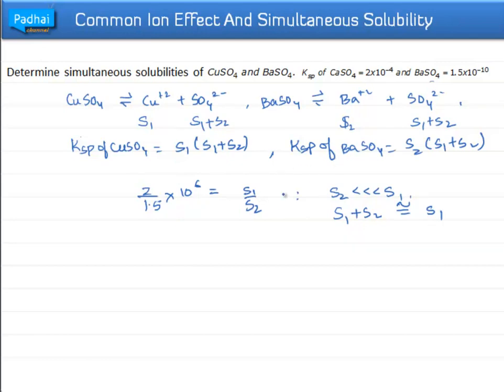In equation 2, Ksp of BaSO4 was 1.5 × 10⁻¹⁰, which was S2 multiplied by (S1 plus S2). We can write S1 plus S2 as just S1.